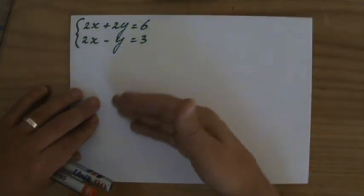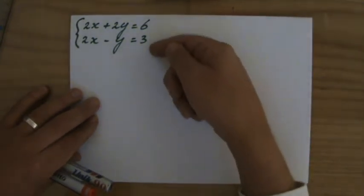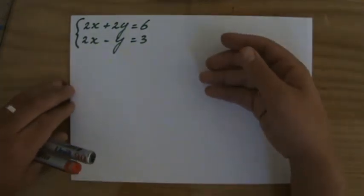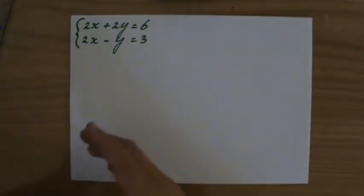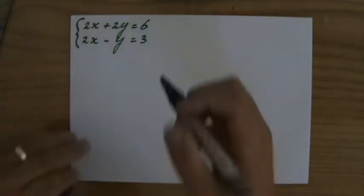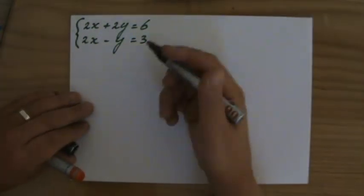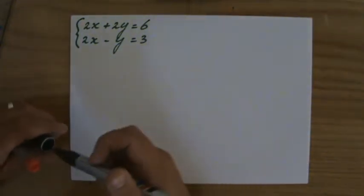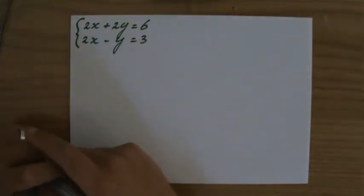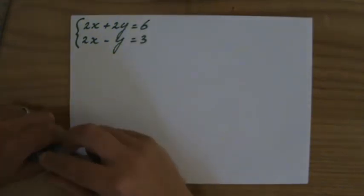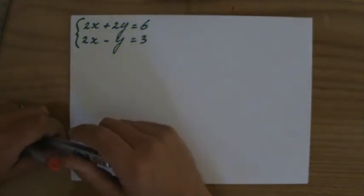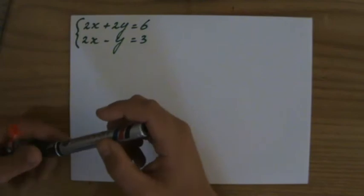And we already saw in the previous example that many times those equations are not written in the gradient intercept form. So before I start graphing them, I manipulate them, I rearrange them so they are written in the gradient intercept form. So perhaps you want to put this video on pause before, and you try it yourself first before you continue, and you look at my workings when you are done. So put it on pause now.